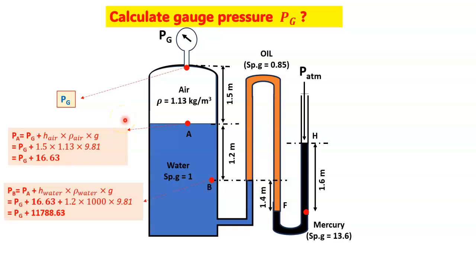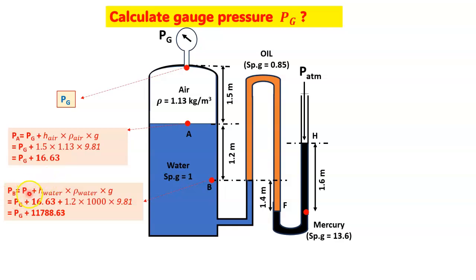Continuing downward through the water column, pressure at point B is Pa plus the water head. Pb = Pa + ρ_water × g × h_water = (Pg + 16.63) + (1000 × 9.81 × 1.2). So Pb = Pg + 11788.63 Pa.